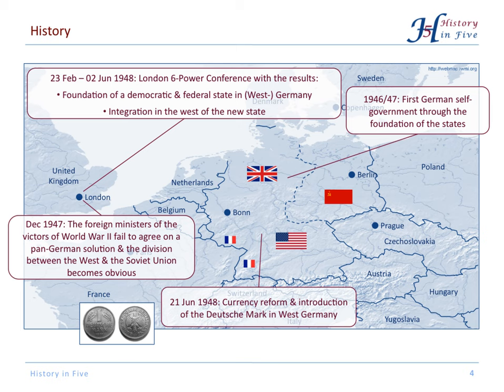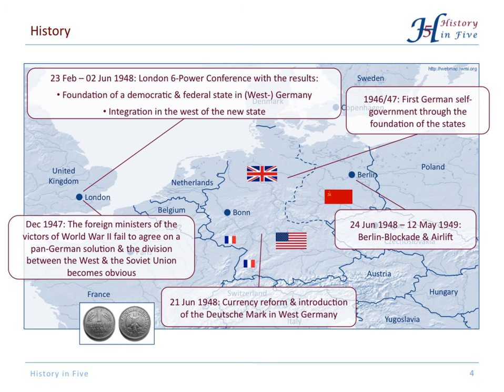On the 21st of June 1948, the Deutschmark was introduced, providing the monetary and economic foundation for a German nation state. The Soviets responded with the Berlin blockade, but West Berlin never fell, because France, the UK, and the US supplied the free city through the air.